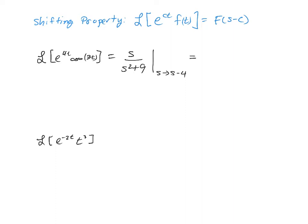And when you do this, you have to make sure that you put the s minus 4 in place of both s's in the Laplace transform. So that's going to be s minus 4 over s minus 4 squared plus 9. And that will be the Laplace transform of that exponential product with the cosine function.